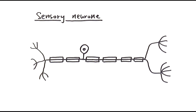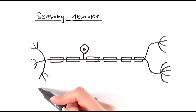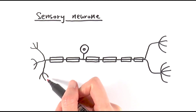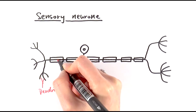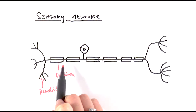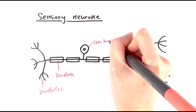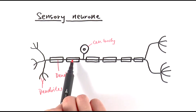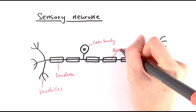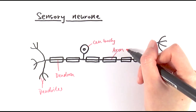Now let's look at the sensory neuron. At the beginning we have small branches called dendrites, which connect to receptors where they receive the signal and initiate the impulse. These are dendrites — smaller branches of the dendron, which is the main neuron structure. Here we have the cell body. When receptors receive a stimulus, the impulse travels through the dendrites, then the dendron, then to the cell body, and then along the axon — the part of the neuron after the cell body — sending the impulse away from it.